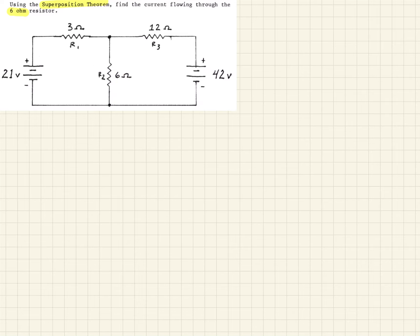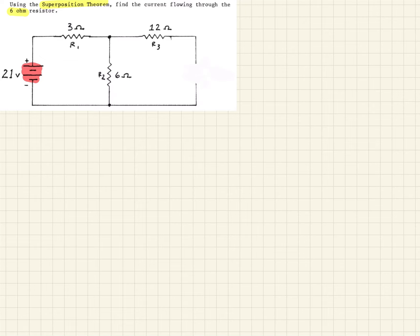When we do superposition, we consider one source at a time. For the first one, we want to consider the 21 volt source. Any other voltage source in the circuit we're going to short out — we treat it as a short circuit. So we take this voltage source and just act like it's not there, and short it out.